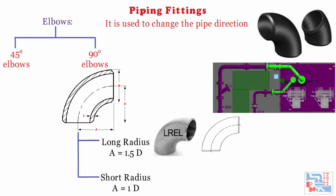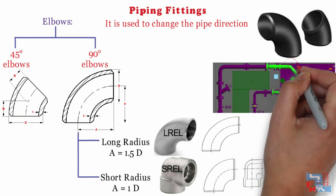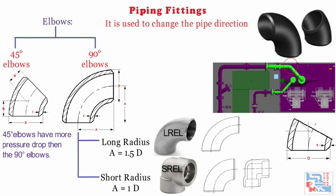Short radius elbow has a bend radius of 1D and is represented in piping material specification as SREL. 45-degree elbows have a bend radius of 1.5D and are used for vertical and horizontal offsets to save cost instead of using 90-degree elbows. However, 45-degree elbows have more pressure drop than 90-degree elbows. 22.5-degree elbows are also available in cast iron construction but are not used majorly.